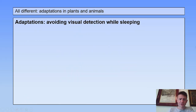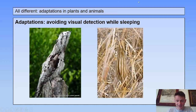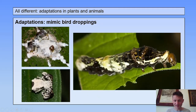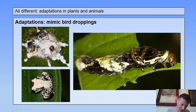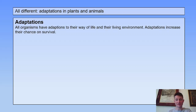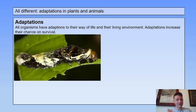There is also adaptation for avoiding visual detection while sleeping — you can see a bird here. This one is my favorite: this is when insects mimic bird droppings. Here you see a caterpillar, but it looks just like a bird dropping. I think this one is a spider, but I'm not sure. So all organisms have adaptations to their way of life and their environment, and these adaptations increase their chance of survival. As we saw with the caterpillar that mimics bird droppings, it makes it less likely to be eaten by a bird.